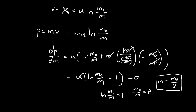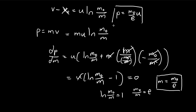Using this, we can find the corresponding maximized momentum by substituting back into the expression. Natural log of m0 over m — with m equal to m0 over e — gives us natural log of e, which is just equal to 1, so we can ignore that. This gives us the corresponding maximum momentum.